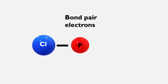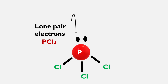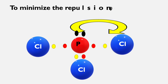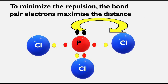According to VSEPR theory, the shape of a molecule depends upon the number of valence electron pairs around the central atom. These electron pairs repel each other due to being negatively charged. They try to minimize repulsion so that they maximize the distance between them. Among the repulsions, lone pair–lone pair repulsion is greater than lone pair–bond pair and bond pair–bond pair repulsion.